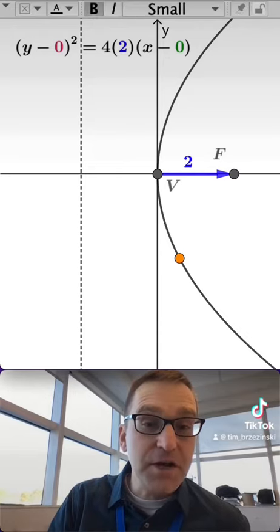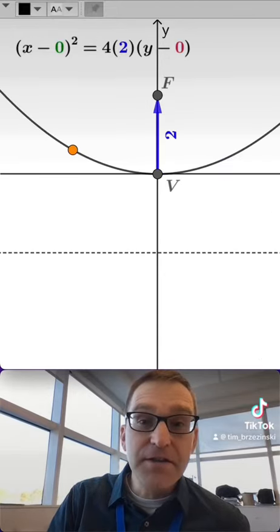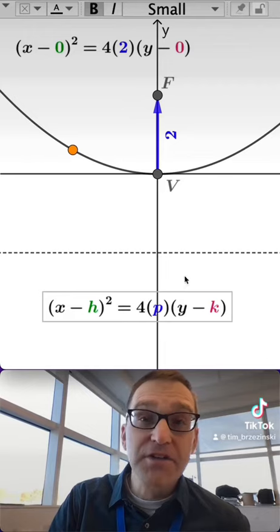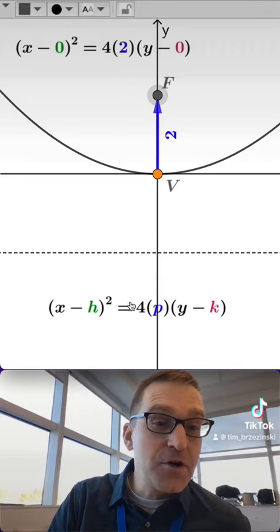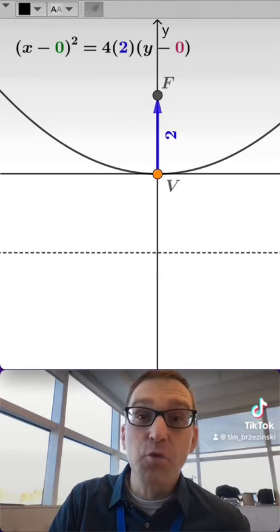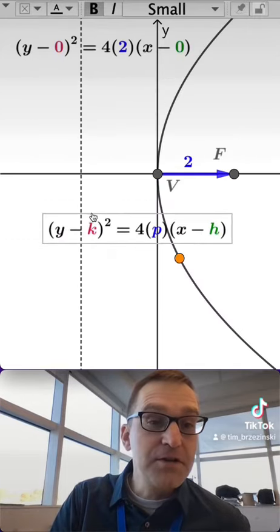So regardless of which way it's oriented, it doesn't matter. In this case, notice how we have the X being squared when it opens up or down. And when it opens right or left, we actually have the Y term being squared, as you can see right here.